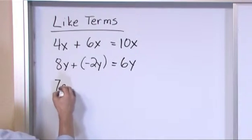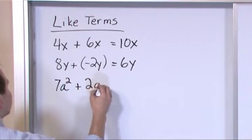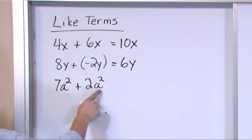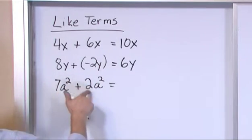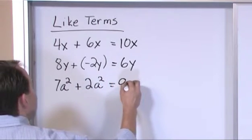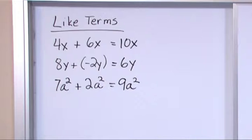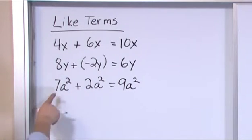But if I had 7a squared and I add to that 2a squared, you see here's the variable, it's squared, but over here I've got the same variable squared so they're like terms. So I can add 7 plus 2 and give me 9a squared. As long as the variable looks exactly the same in both of my little terms here, I can collect these guys and add up the numbers and carry along my little variable.